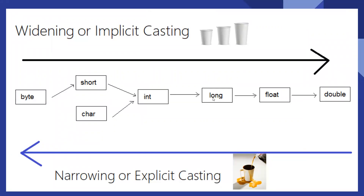If you move from left to right in the data type diagram, you are increasing the memory size. If you have a byte value and put it into a higher level type like short, integer, or long, which hold the same kind of numeric data with a greater range, there will be no issue. This is called widening — you are widening the memory area even though you have less data. It is done implicitly by Java, with no loss of memory or data.